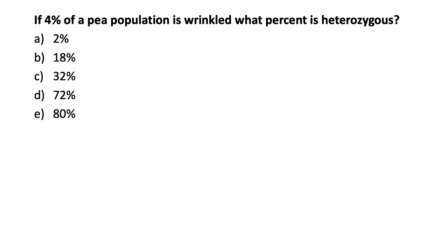Okay, so we know that q squared is, in this case, 4%, or 0.04, which means that q is 0.2. Therefore, p is 1 minus q, 1 minus 0.2 is 0.8, which means that the frequency of heterozygous alleles, or 2 times pq, is 0.32, or 32%. So the correct answer choice is c.